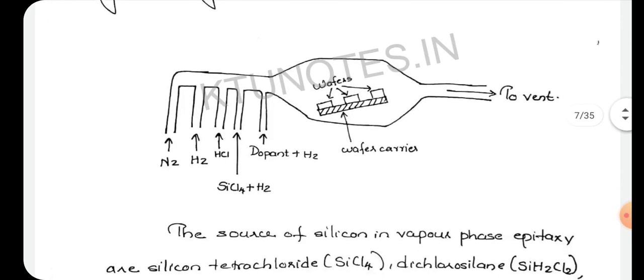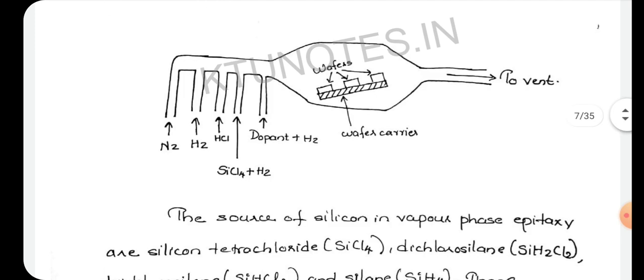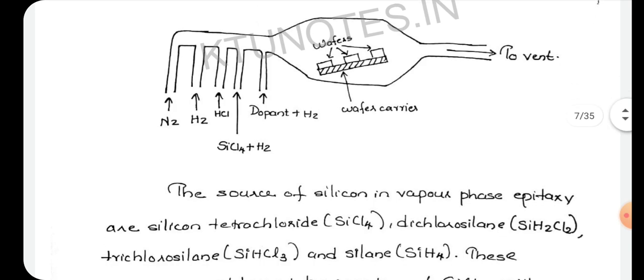This is the setup for vapor phase epitaxy. Here, different types of gas species are given as inlet: nitrogen, hydrogen, HCl, SiCl4, H2, and dopant gas. The wafers are placed in the wafer carrier and ventilation gas is provided.